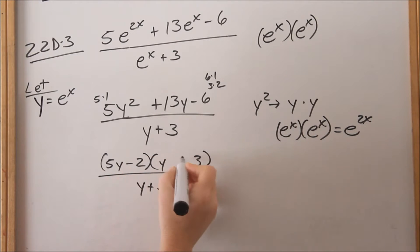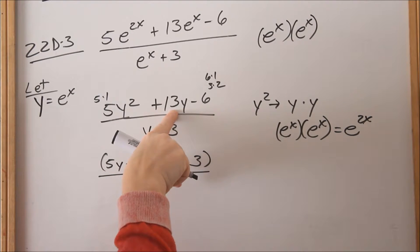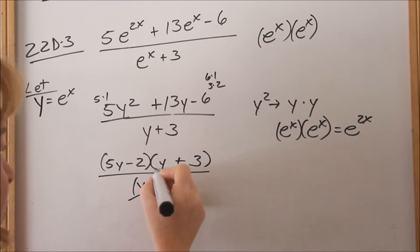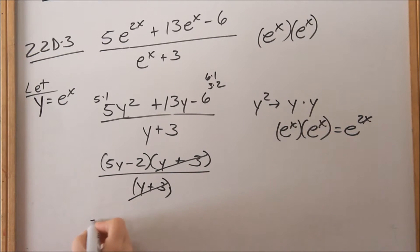This needs to be negative, this needs to be positive. When you FOIL this back out, you'll get a positive 13y in the middle. Now you can look to see if anything cancels. Those are married, so those parentheses cancel. I'm left with 5y - 2.